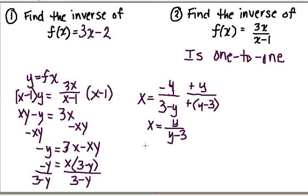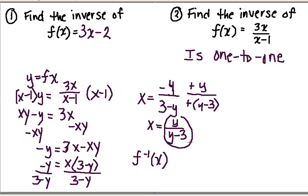And now for my last step, I need to exchange x and y to get my inverse. So my f inverse of x is going to be equal to this, but in place of my y's, I'm going to put x's: x over x minus 3.